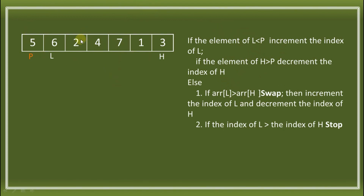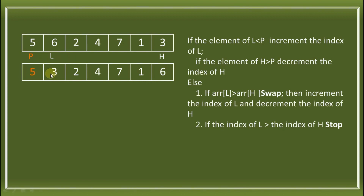Using these simple algorithms, we apply it to our array. First, check if element of L is less than P: element of L is 6, and 6 less than 5 is false, so nothing happens. Then check if element of H is greater than P: 3 greater than 5 is also false. Since both are false, we check if element of L is greater than element of H: 6 greater than 3 is true, so we swap. After swapping, 3 and 6 exchange locations. Then increment L — L moves to index 2 — and decrement H — H moves to index 5.